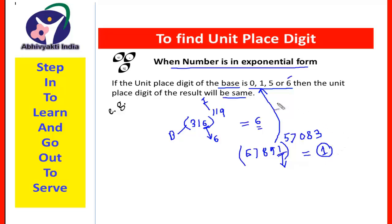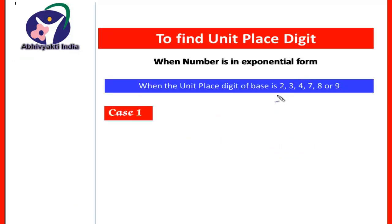Friends, you will ask: if the unit place digits are other than 0, 1, 5, or 6, then what should be done? There is also a trick or shortcut to find the unit place digit. We will see that when the unit place digit of the base is 2, 3, 4, 7, 8, or 9, then two cases arise.